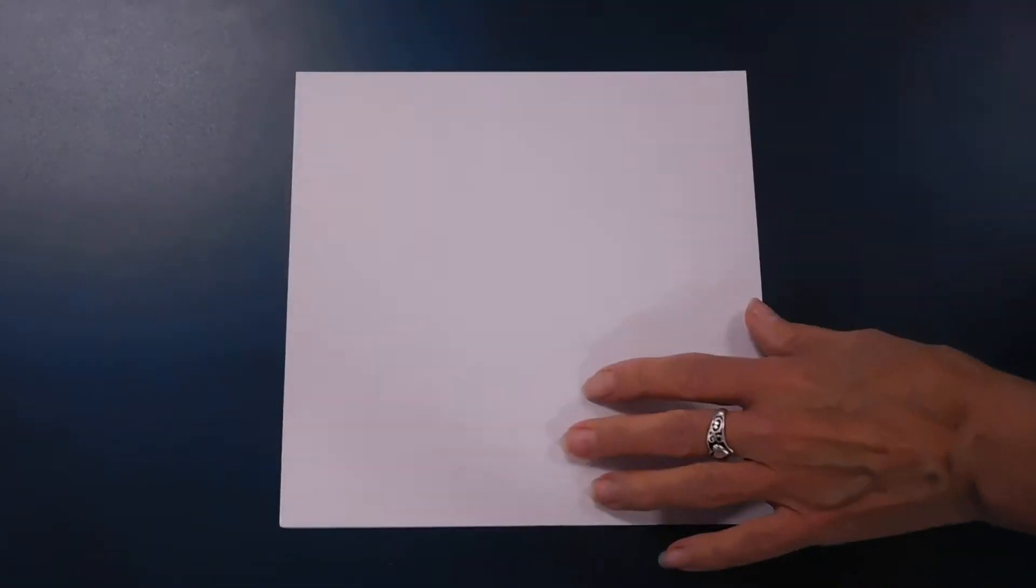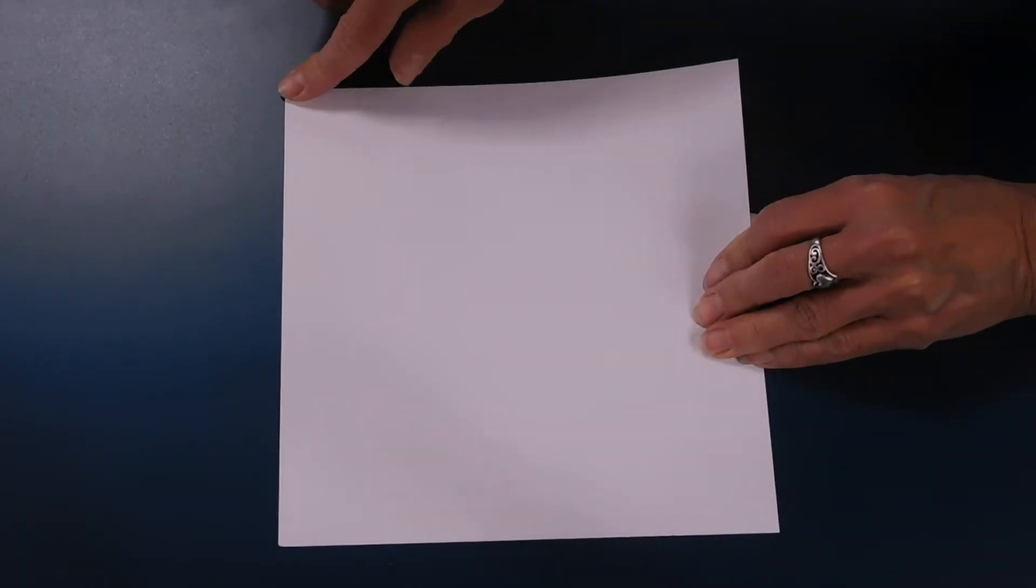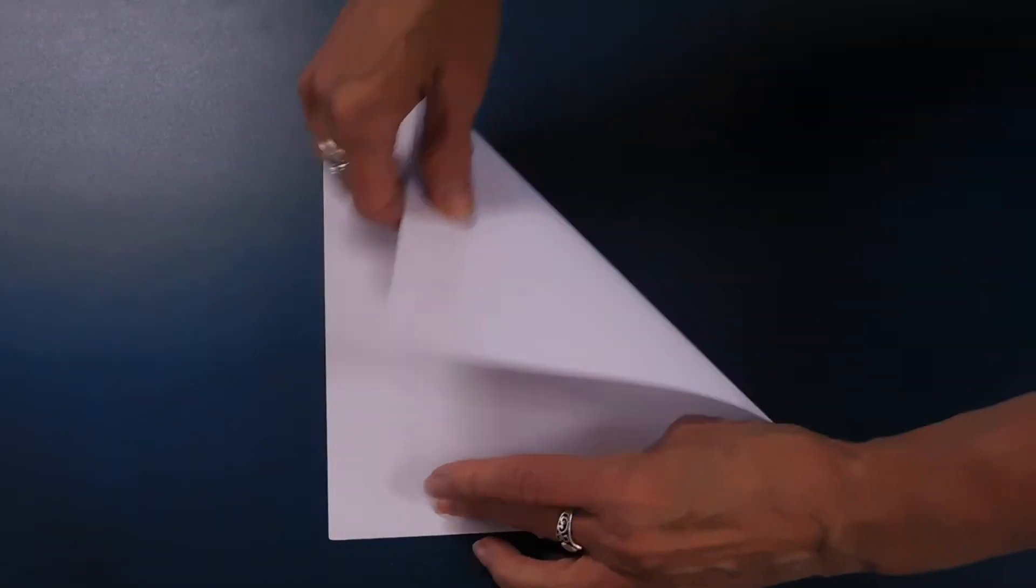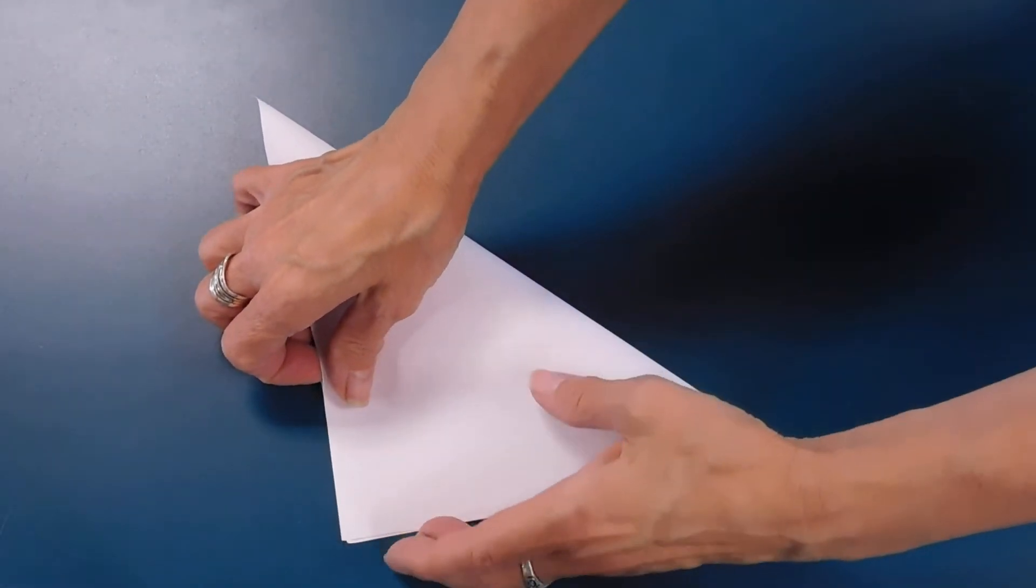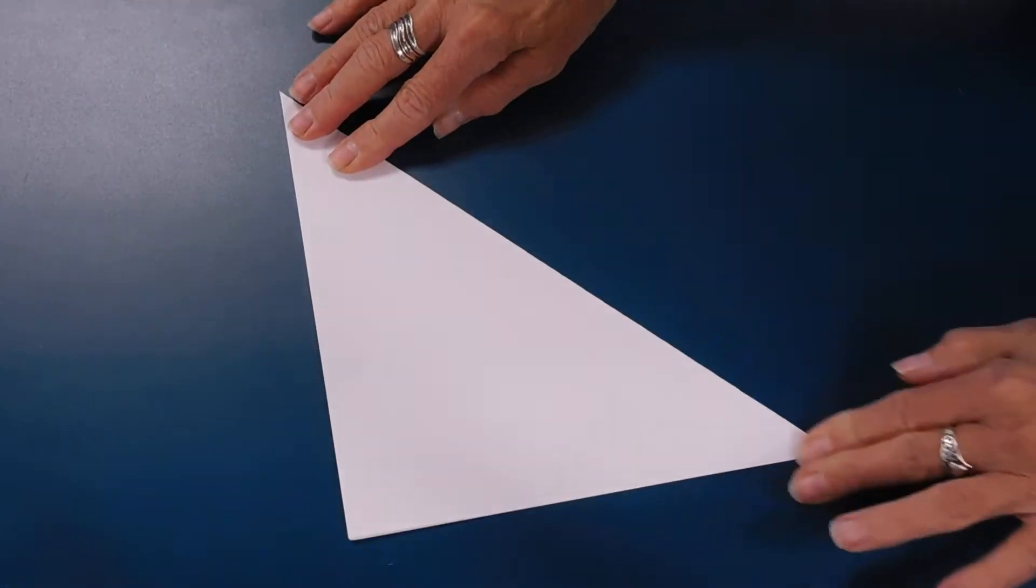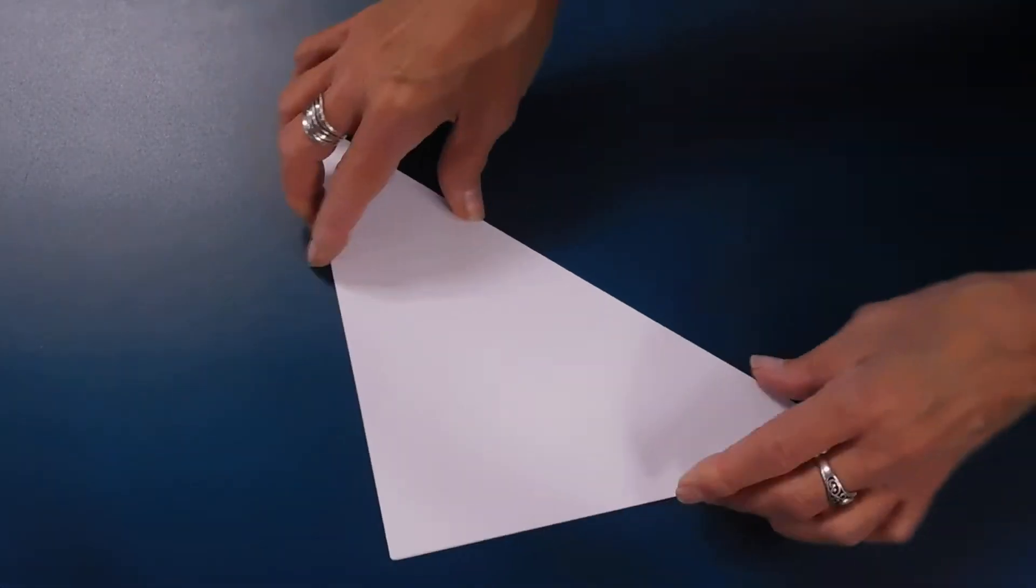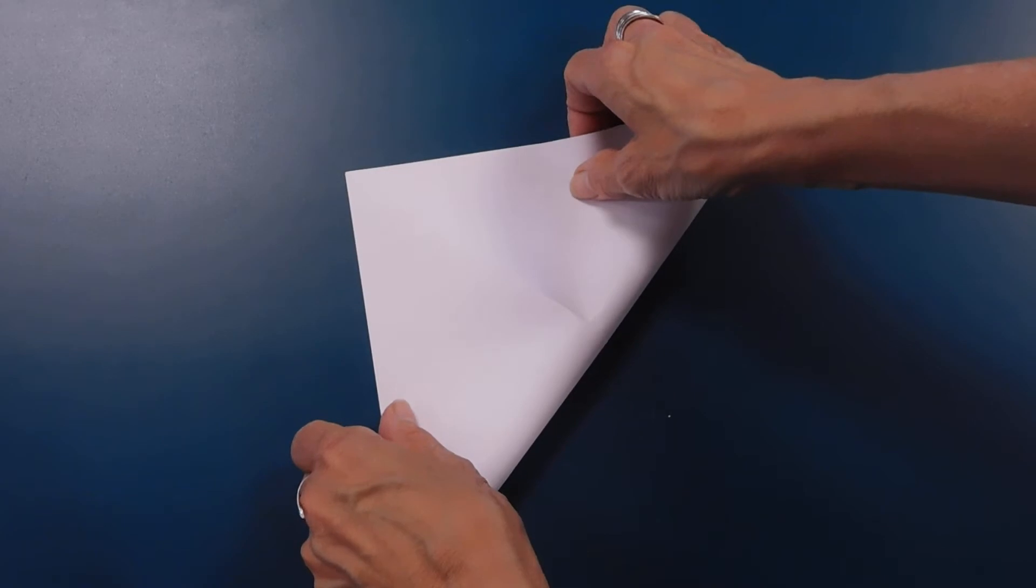So let's get started. We are going to start this like we've started a lot of these projects. We're going to fold, make a fold going diagonally in one direction. Make sure you crease that well, open that up, make a fold going diagonally in the other direction.